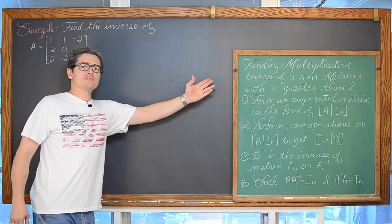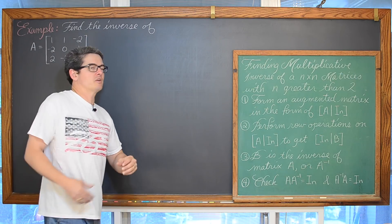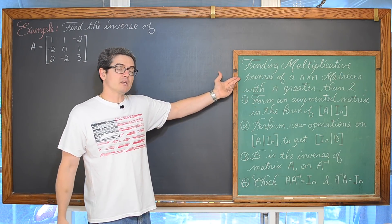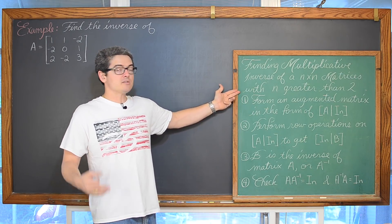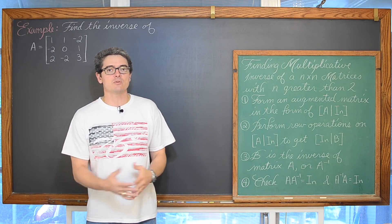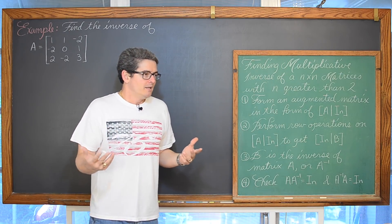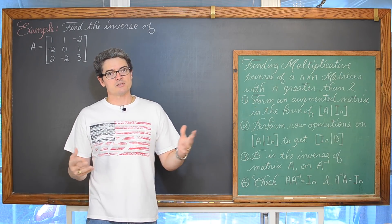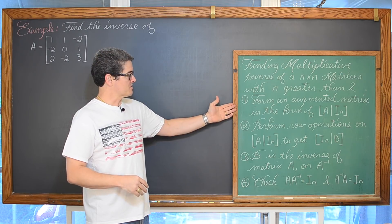Moving on up to 3x3 and larger matrices. How do you find a multiplicative inverse of an nxn matrix where n is greater than 2? Instead of a 2x2 matrix — 3x3, 4x4, 5x5 — there is no easy, real easy process, at least if you are doing this math by hand, of finding that inverse matrix.